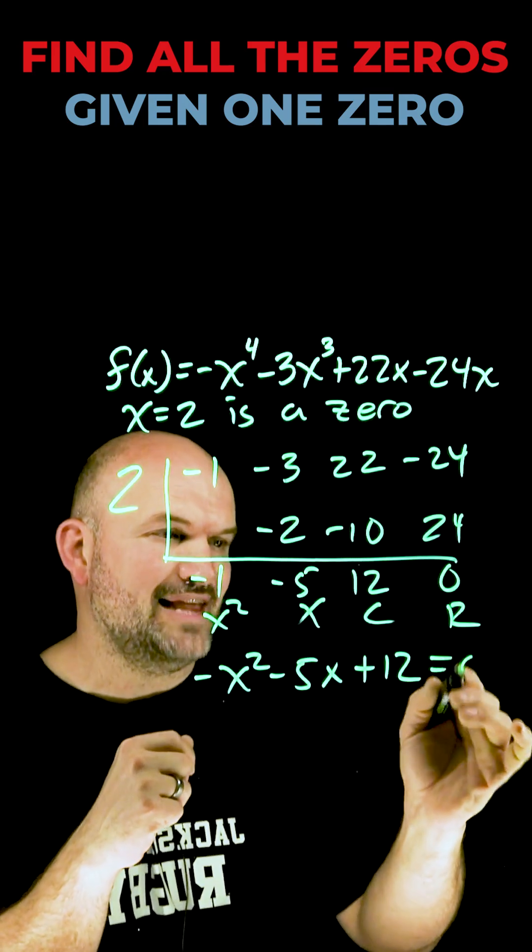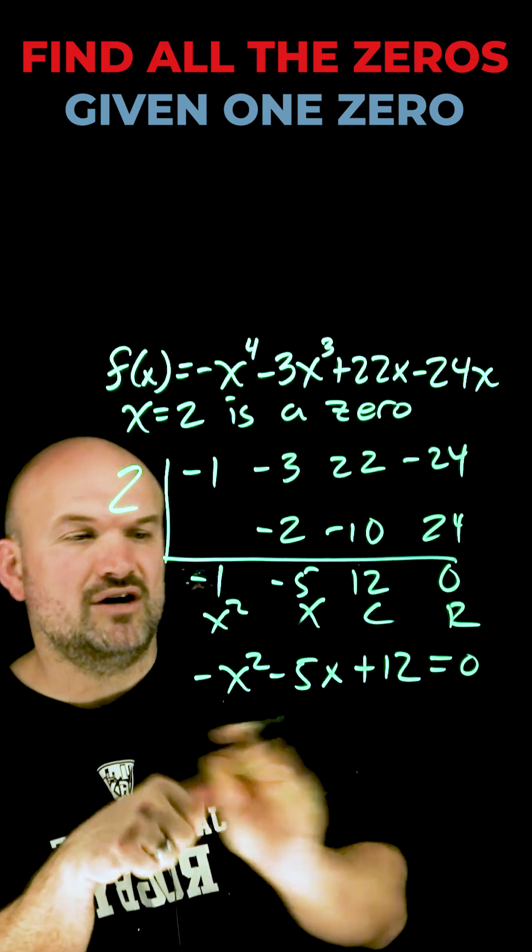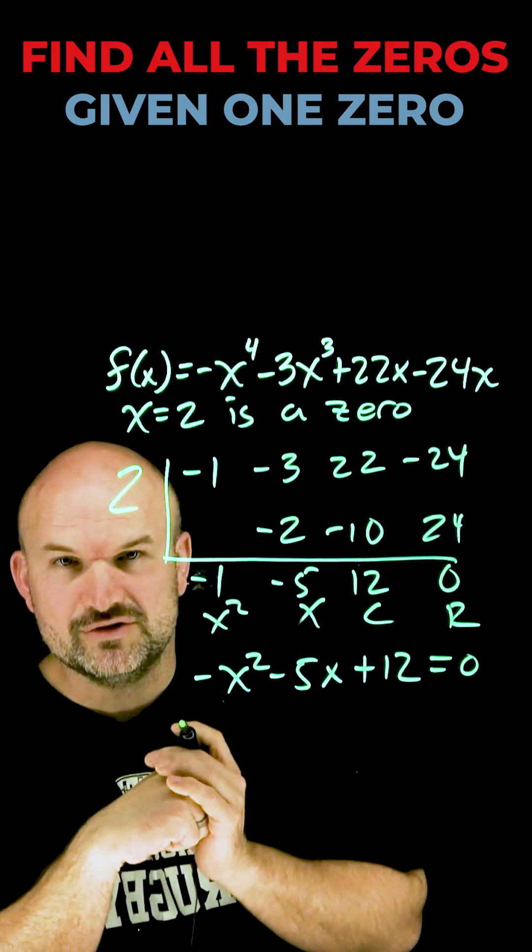Now to find the remaining zeros I just need to set this factor equal to zero and solve. Unfortunately this is not factorable so I'm going to have to use the quadratic formula.